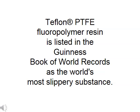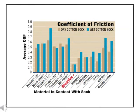PTFE is listed in the Guinness Book of World Records as the slipperiest man-made substance. In this chart representing the coefficient of friction of many common orthopedic materials, shear band in a dry state has a coefficient of friction of approximately 0.18, and in a wet condition it also has a coefficient of friction of 0.18. Testing has been done with both dry and wet cotton socks, since the coefficient of friction tends to be higher when moisture is present. A solid polyethylene surface has a coefficient of friction of 0.3, which is almost double the COF of shear band.